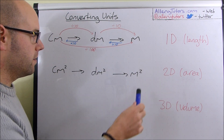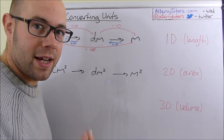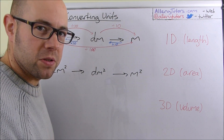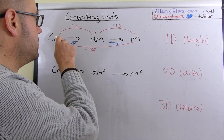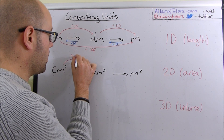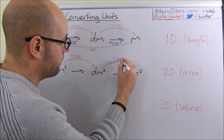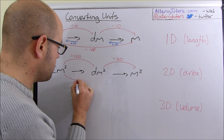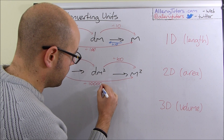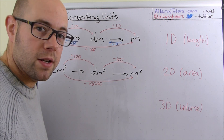When we're converting, it's exactly the same thing except for every extra dimension we have to add an extra zero. In one dimension we divided by 10 going from centimetres to decimetres. So going from centimetres squared to decimetres squared, that's going to be divided by 100 — we add an extra zero for every dimension. Going the other step, decimetres squared to metres squared, that's also divided by 100. If we're going from centimetres squared all the way to metres squared, we have four zeros — two there and two there — so that's divided by 10,000.